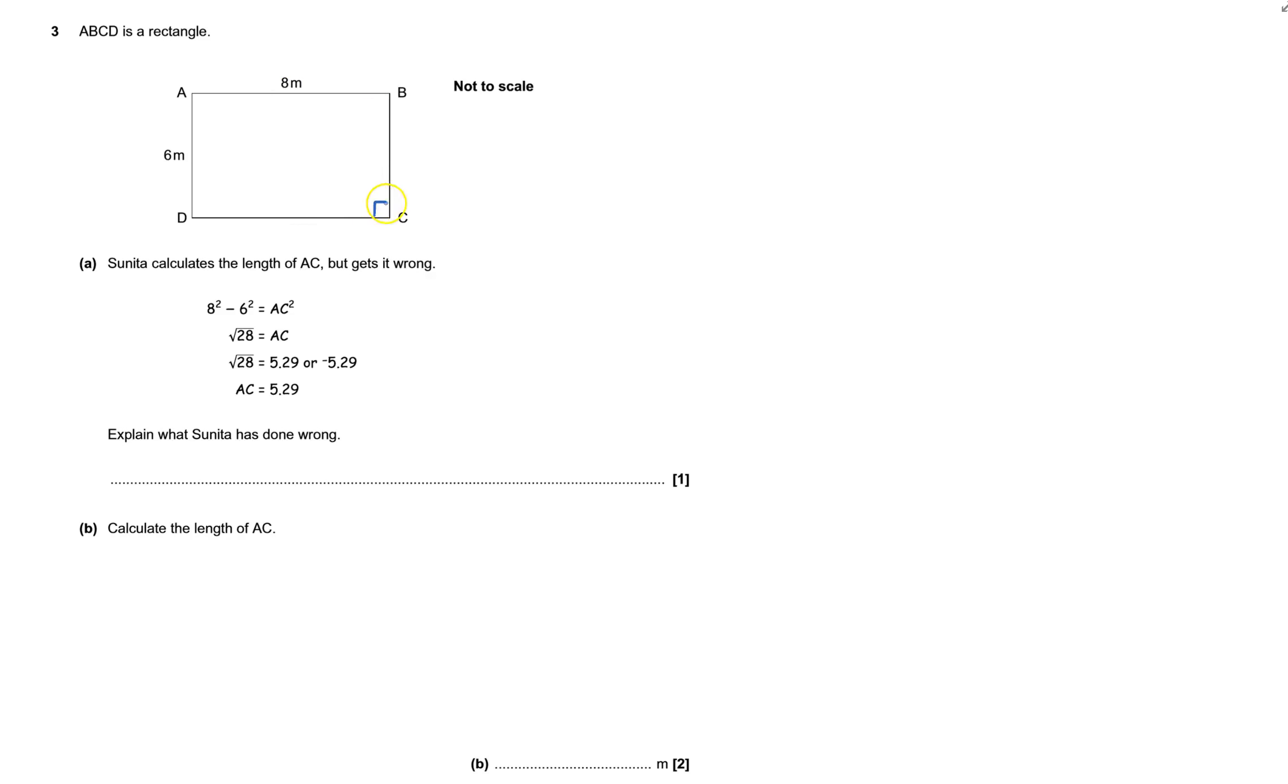ABCD is a rectangle with right angles, so you need to calculate the length of AC. But she gets it wrong. Explain what she's done wrong. You've got to find the length of AC.